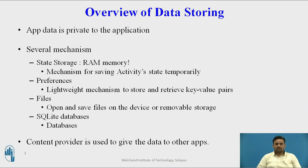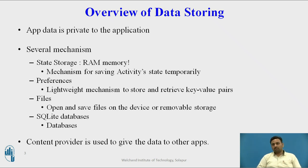Second one is the preferences. It is a lightweight mechanism to store and retrieve key-value pairs. Certain settings and certain access mechanisms are stored using preferences. Third one is files. These are liberal files with no defined structure. Any data can be stored and retrieved from these files, and it can be stored on the device, mobile storage, or at a remote center.